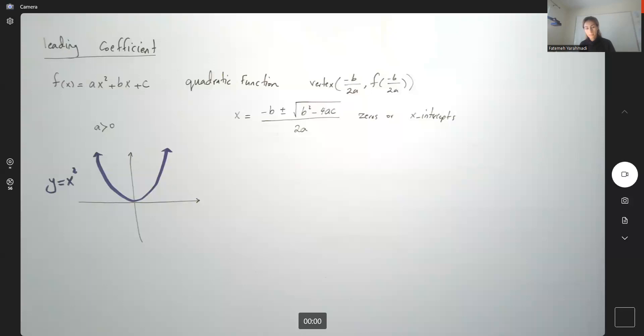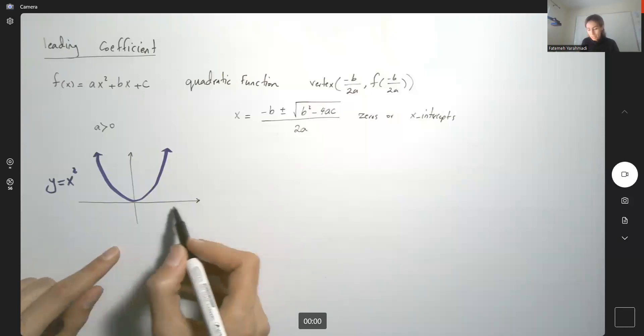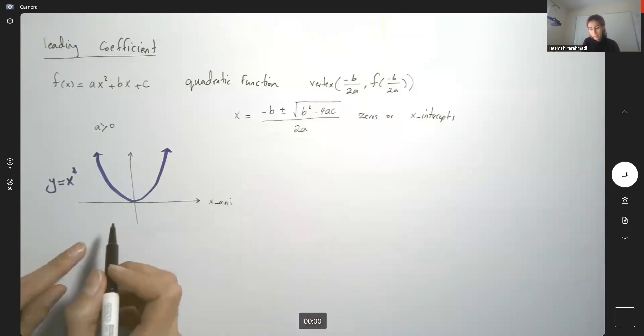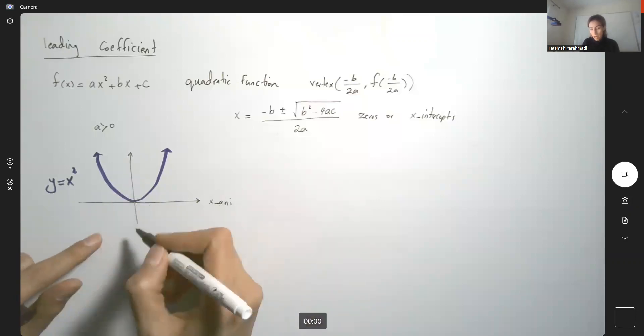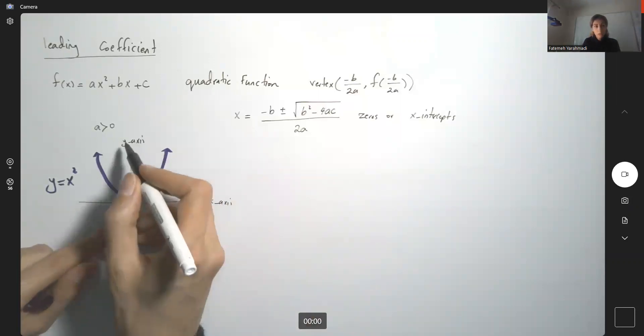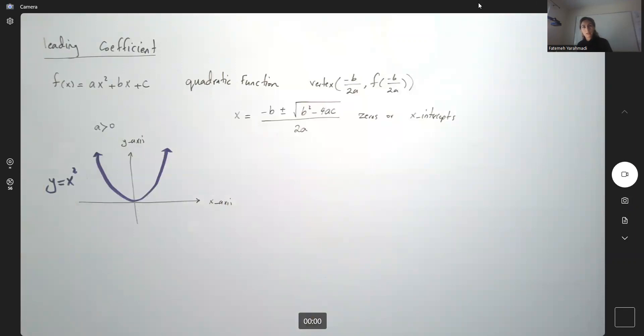First of all, as x—just an observation—remember on the x-axis, your x goes to the right-hand side or left-hand side. On the y-axis, your y goes up or it goes down, right? This is the behavior that we have for our quadratic function.